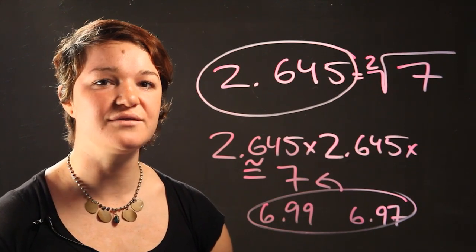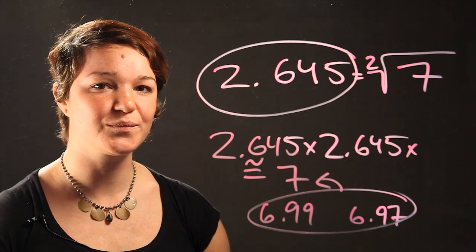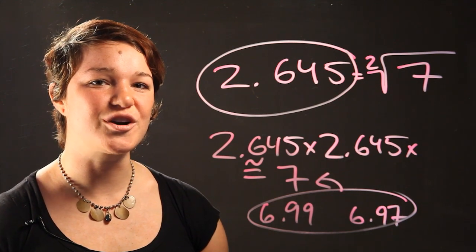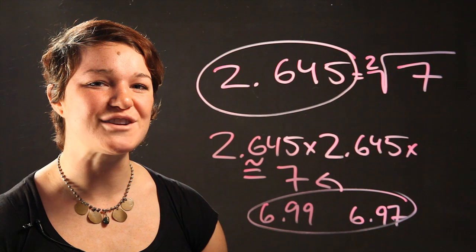So there you have it. That's how you convert a decimal into a radical. Please come back for more, I'm Dr. K, thanks for watching.